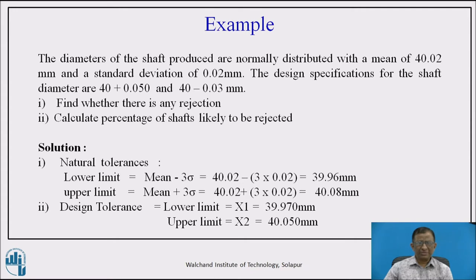At the end of the session, learners will be able to solve similar problems on design and natural tolerances commonly used in engineering practice. This example involves a shaft produced on a particular manufacturing setup. The diameters of the shafts vary and are assumed to follow a normal distribution with a mean value of 40.02 mm and a standard deviation of 0.02 mm.